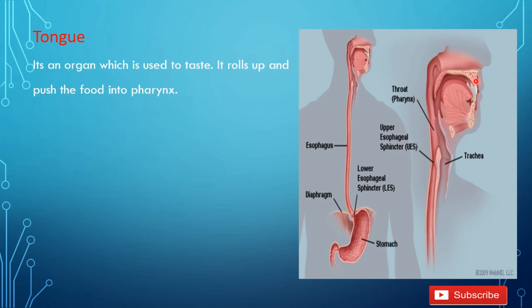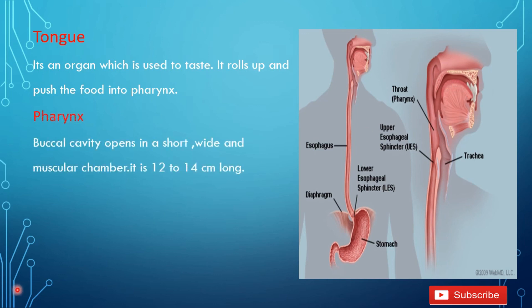In the mouth, after physical digestion, food passes into the pharynx. The buccal cavity opens into a short, wide, and muscular chamber. It is 12 to 14 cm long. This short, wide tube is called the pharynx. It is basically just a passage.